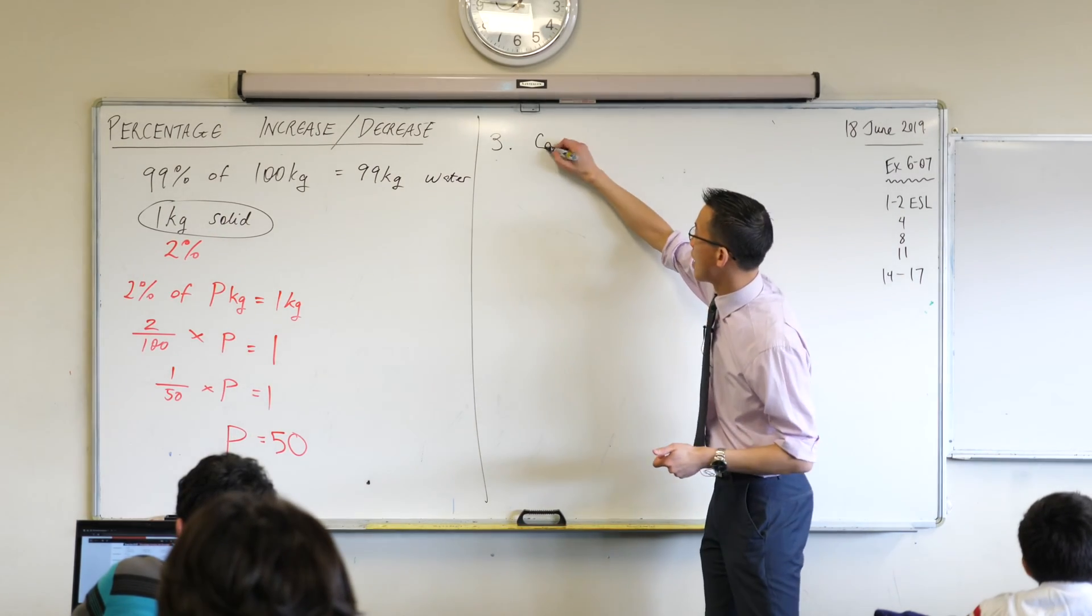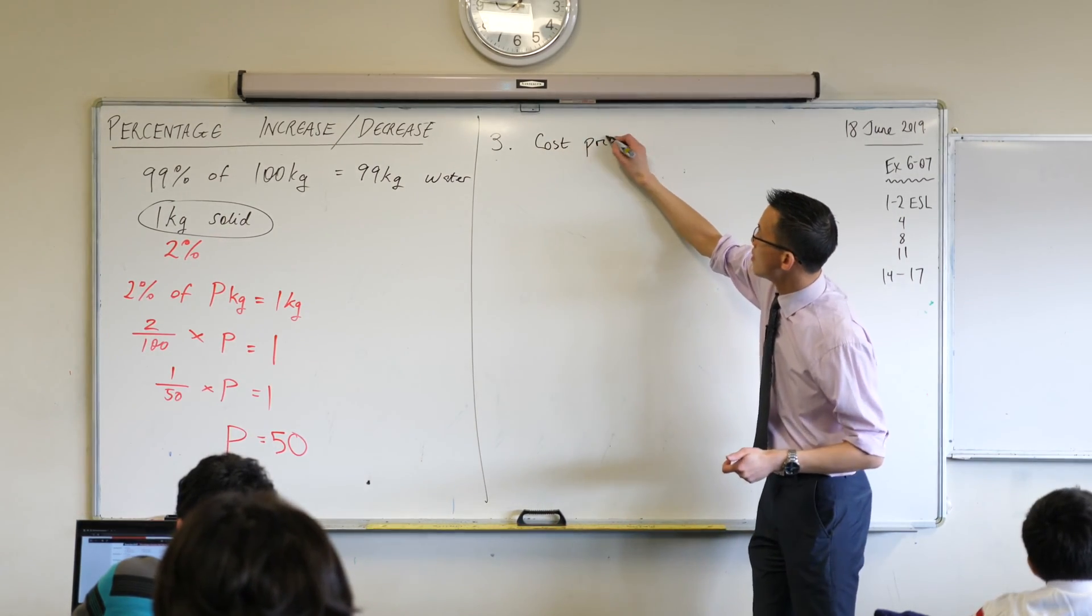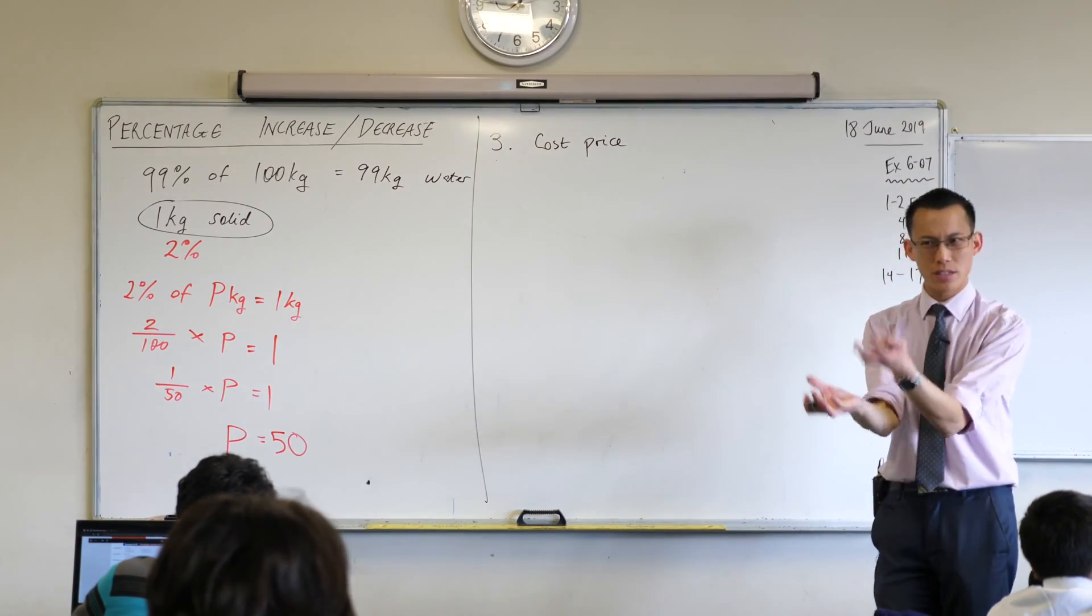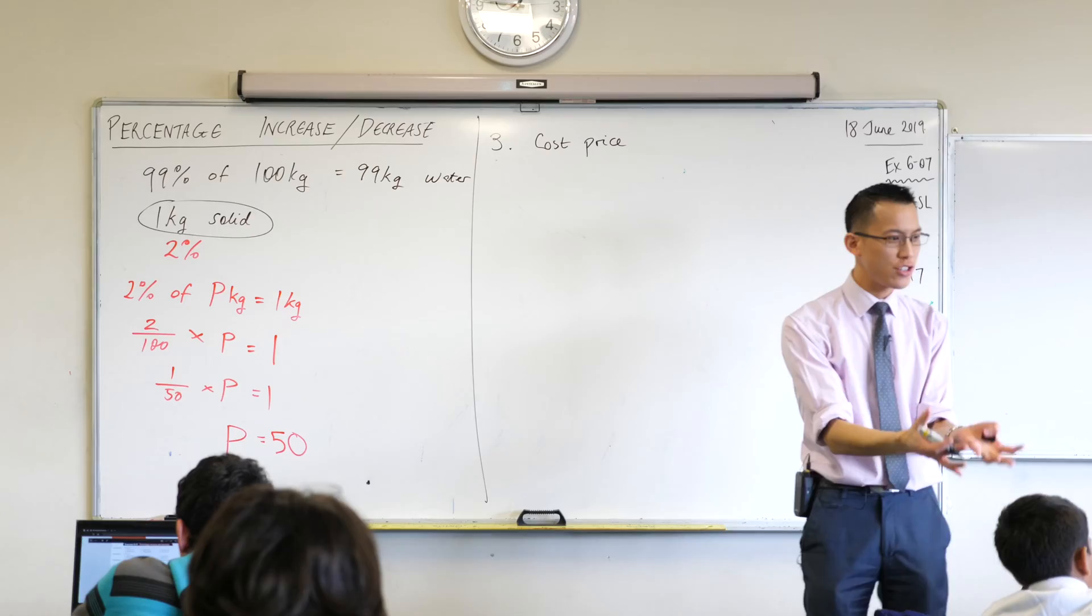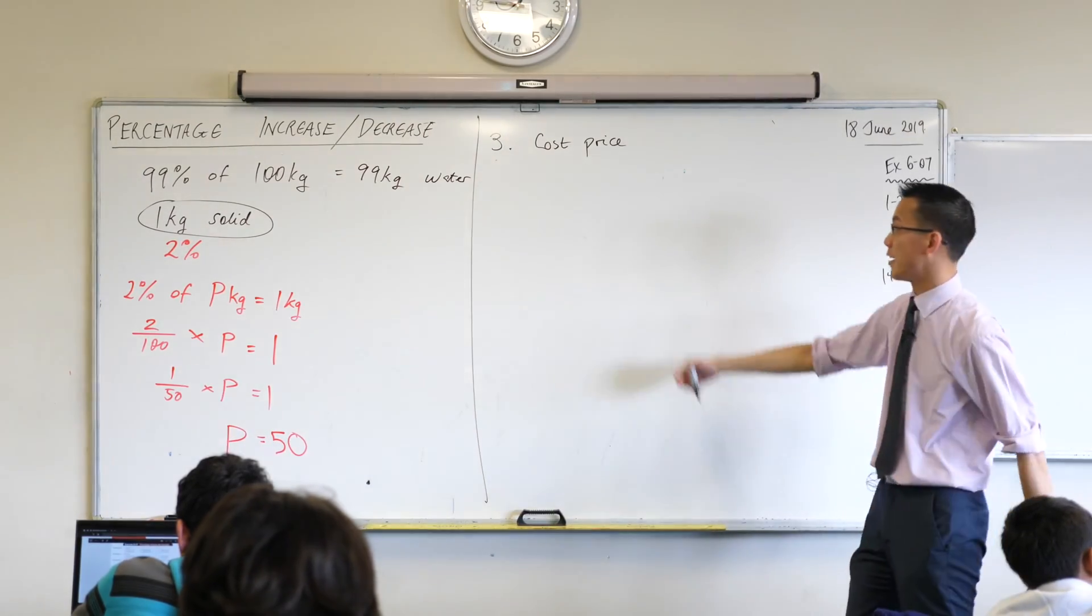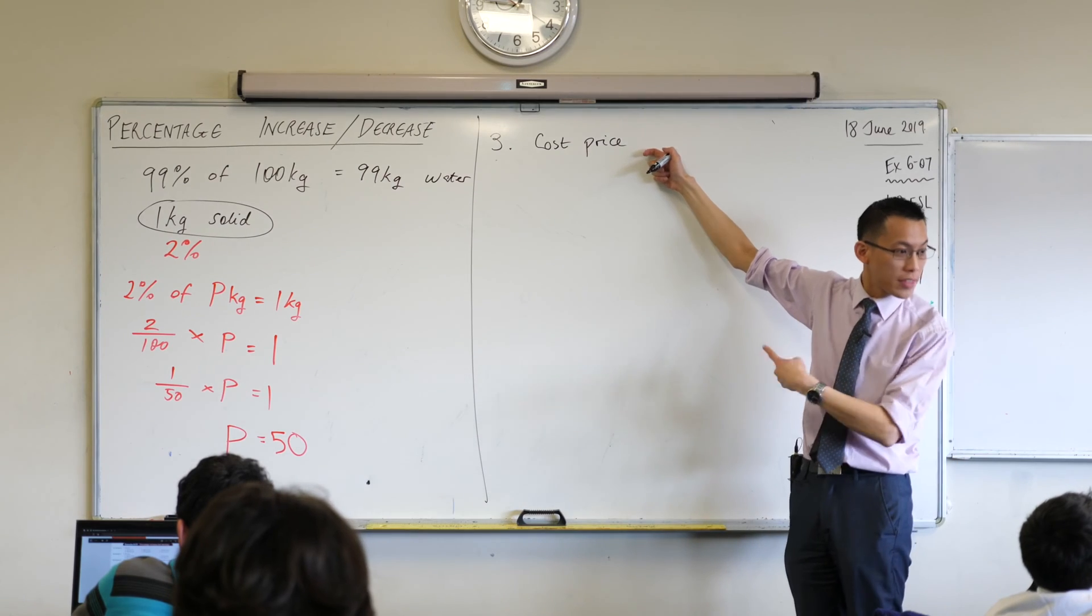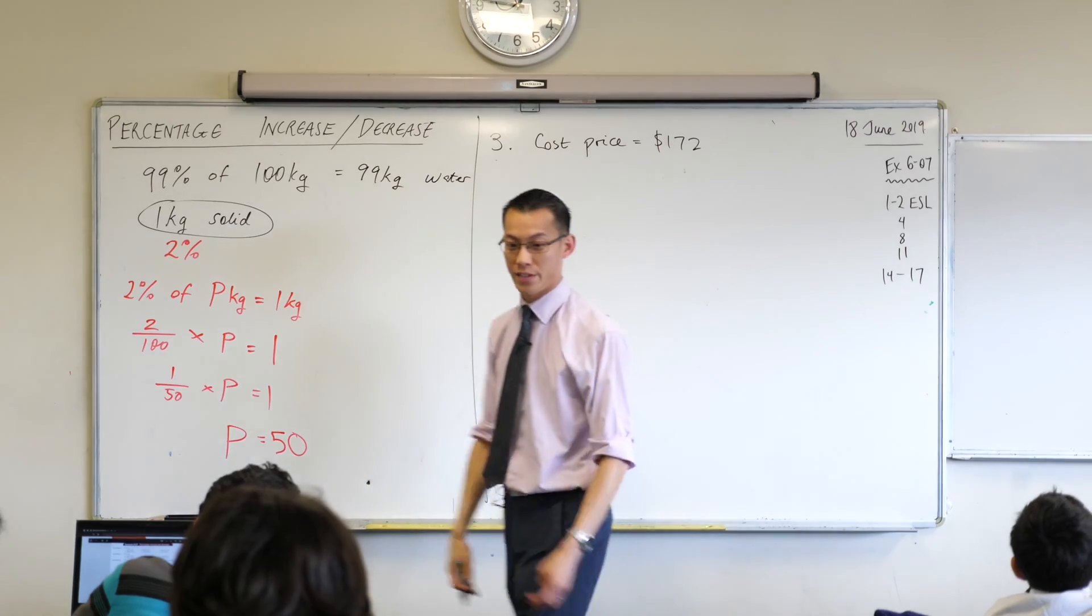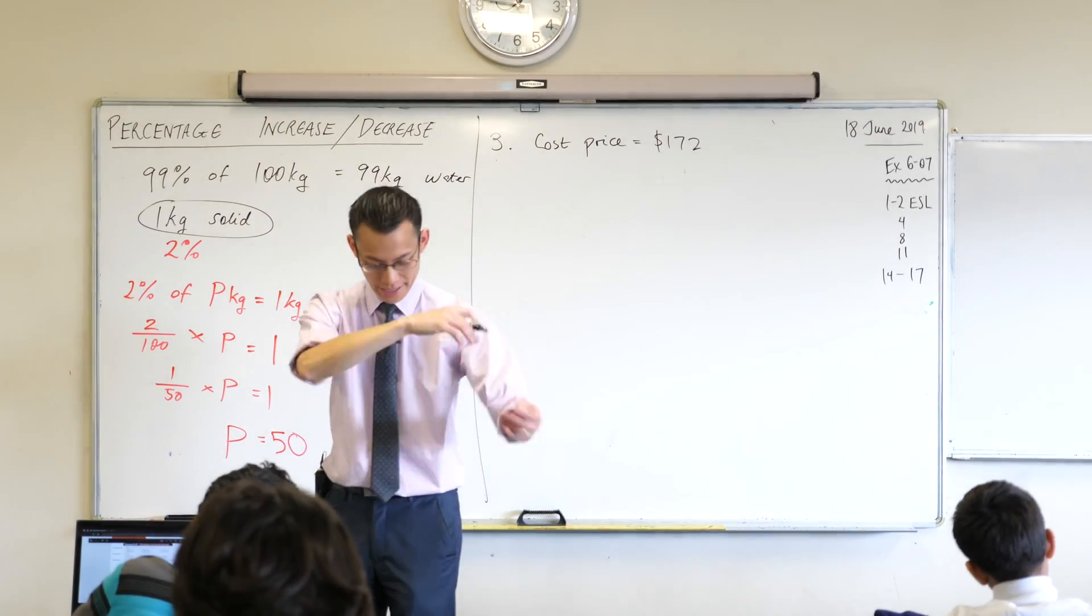So I'm going to call this cost price. Rather than just write down a number and then in my working, it's like what does this number mean? What does it stand for? If I'm reading your working, what kind of thinking process do I see going on here? I'd love you to write with me what this quantity actually stands for. Cost price equals $172. That should be your first line of working.